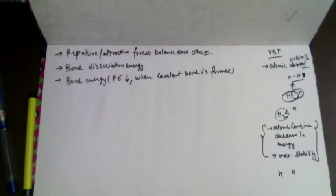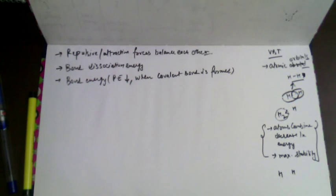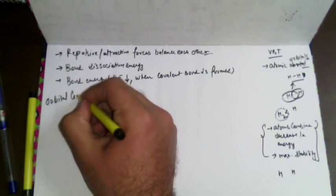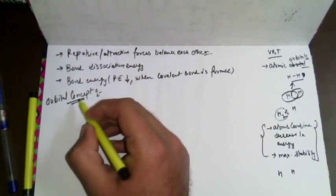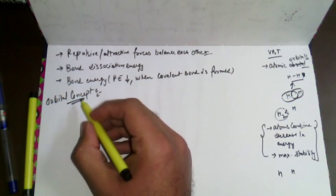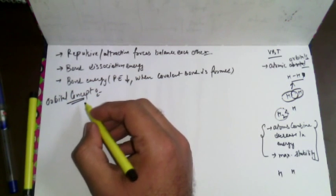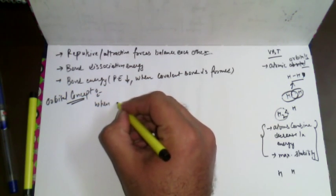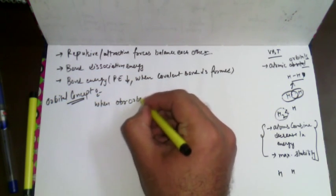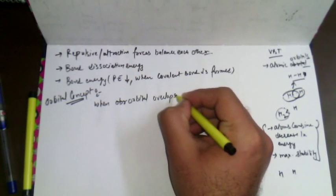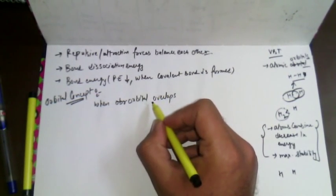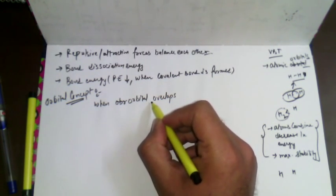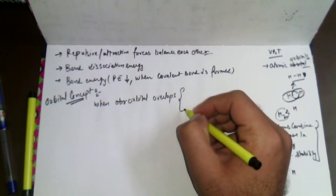When we talk about the orbital concept of covalent bond under VBT theory, the formation of covalent bond takes place as a result of orbital overlap. So we can define: a bond is formed when there is overlapping of orbitals belonging to two atoms with electrons of opposite spin. This is the most important point.